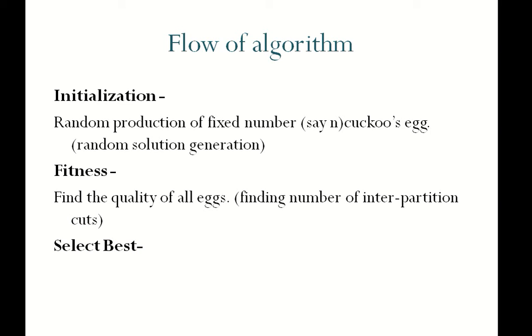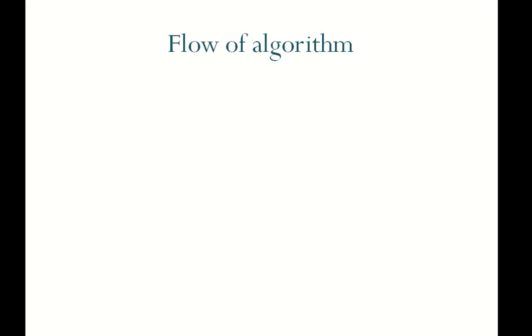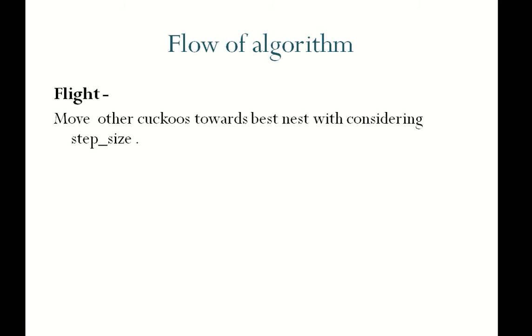Selection of best egg. After finding the fitness value of all the eggs, we select the best among all having the least value of inter-partition cuts. Now, further, all cuckoo fly towards the best cuckoo. This represents all the random generated solutions move towards the best solution within the solution space with some value of step size. Step size is a variable to decide how much distance travelled by a cuckoo towards the best in one iteration.